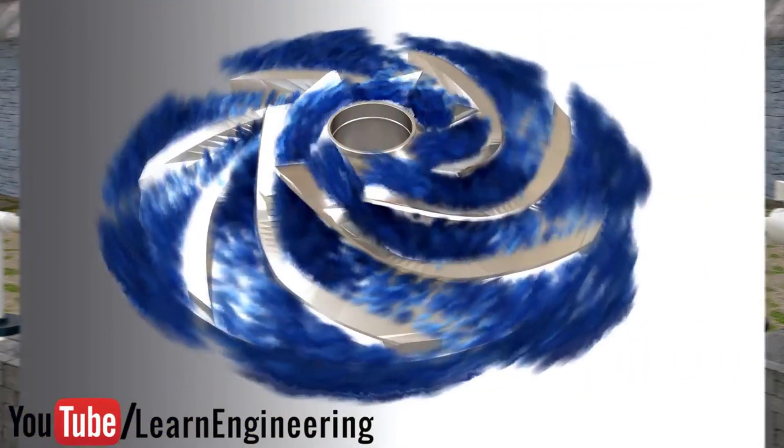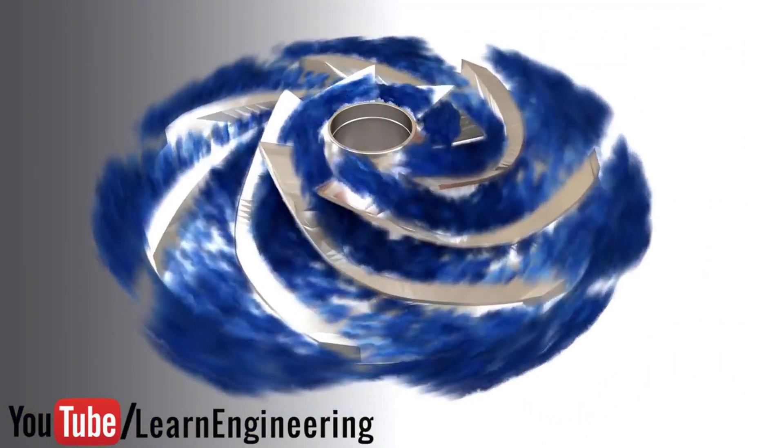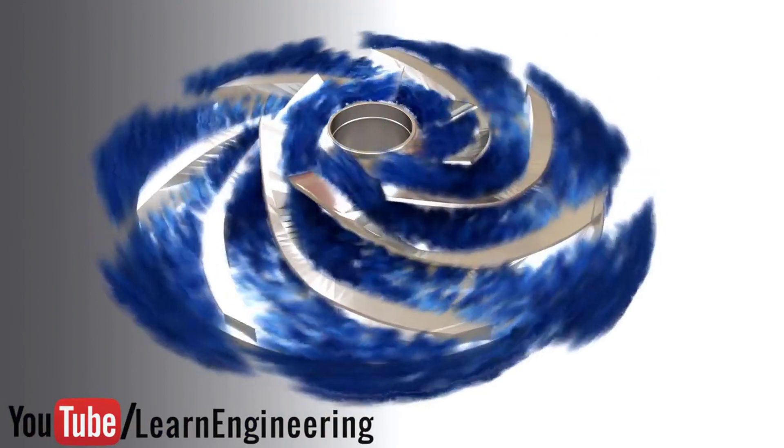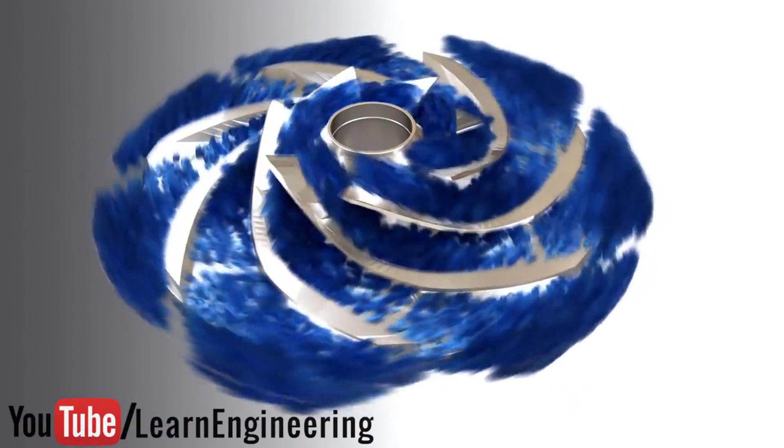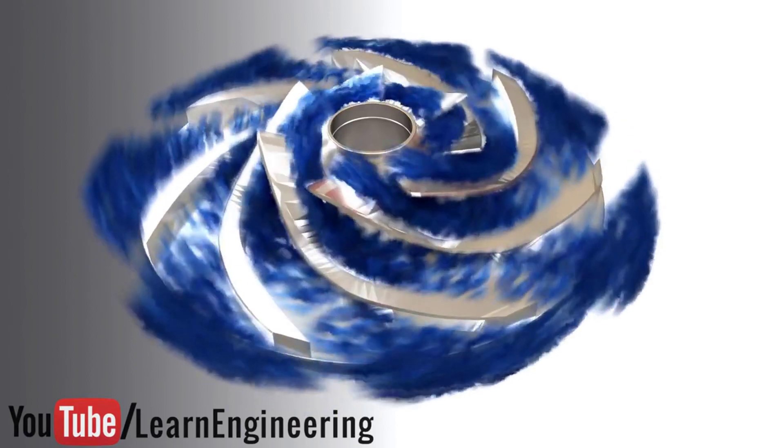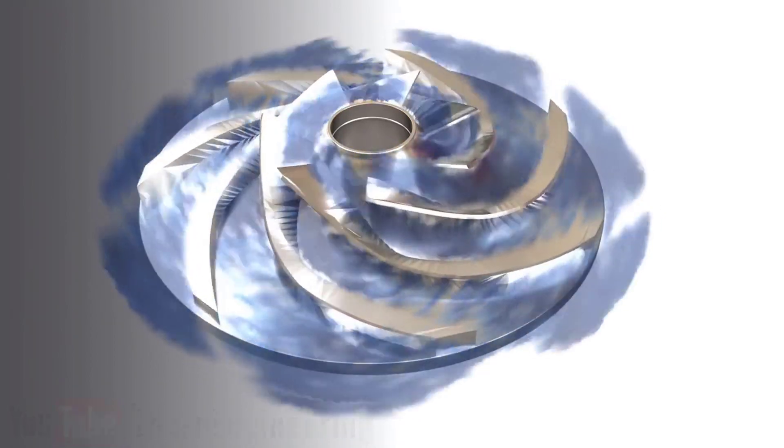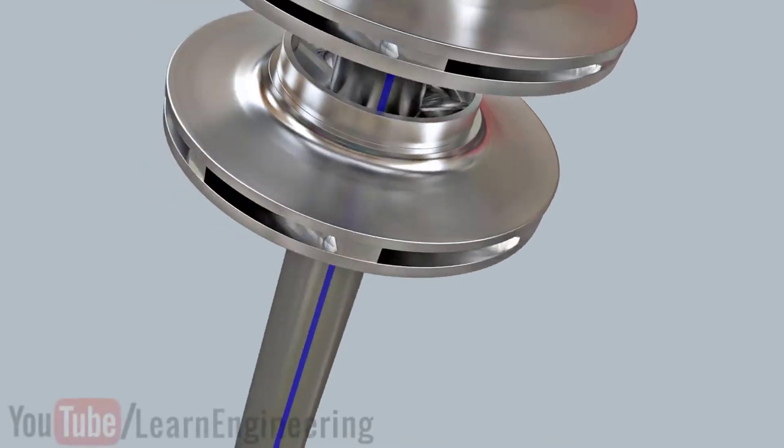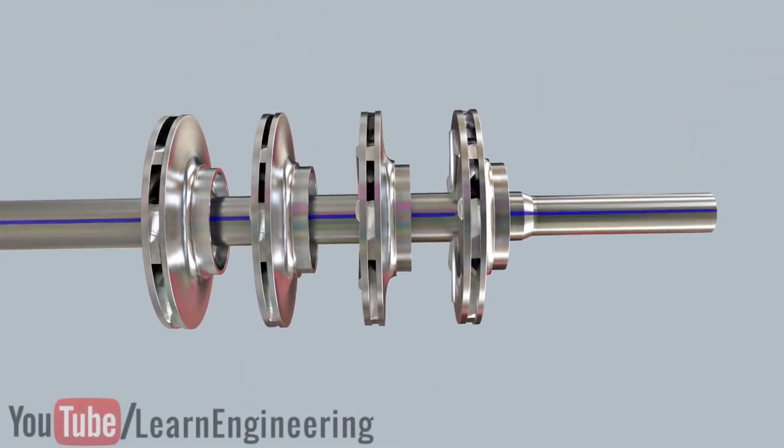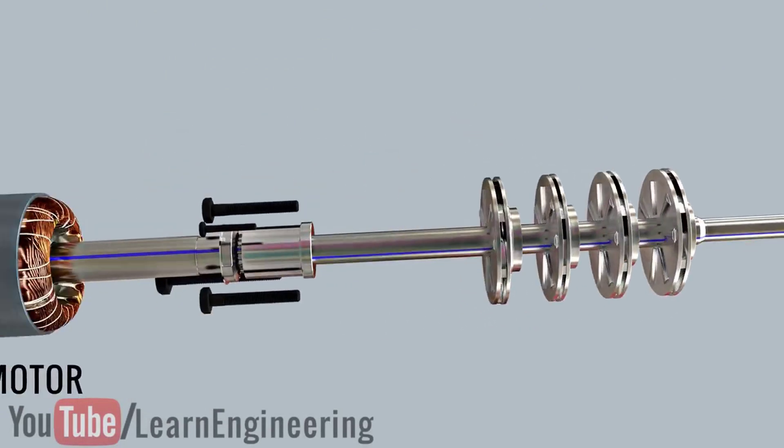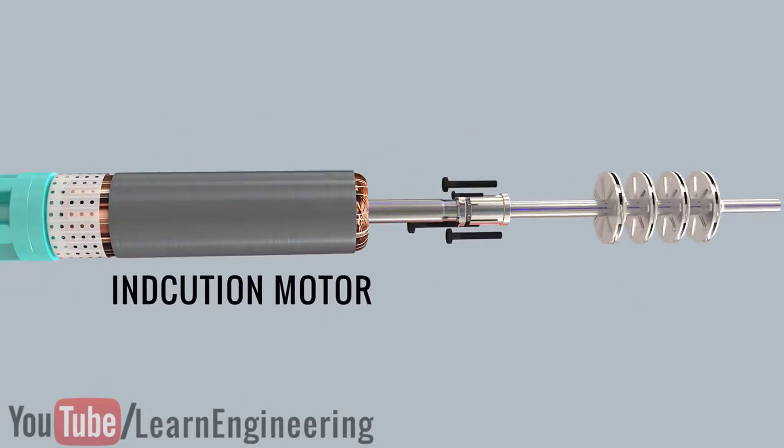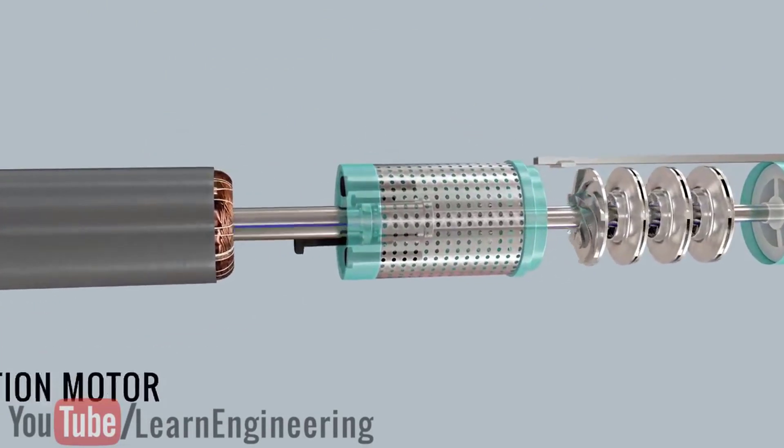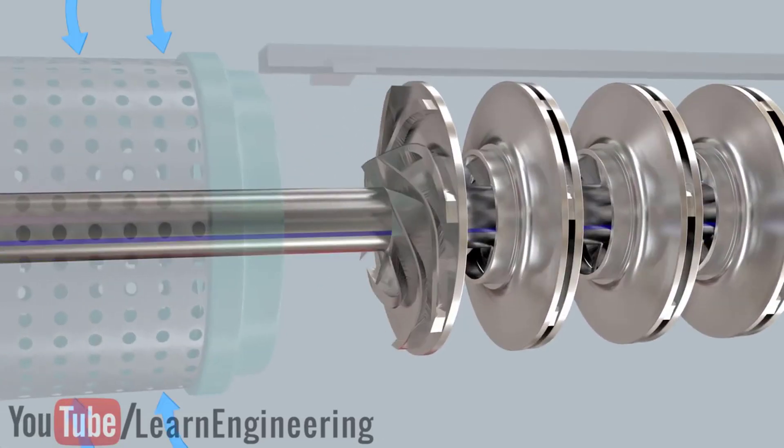The submersible pump is a centrifugal pump. You can see how the impellers are throwing the water outwards. The impeller blades are the backwards curve type. Here, many of the impellers are connected onto a single shaft, and this shaft is driven by an induction motor.